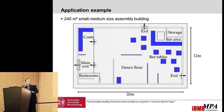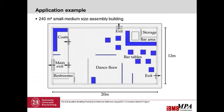I want to show a little example. This is a 240 square meter small-to-medium size assembly building that is code compliant with German codes. We have a bar area, bar tables, a dance floor, a coat room, and some restrooms — think of it as your local discotheque.